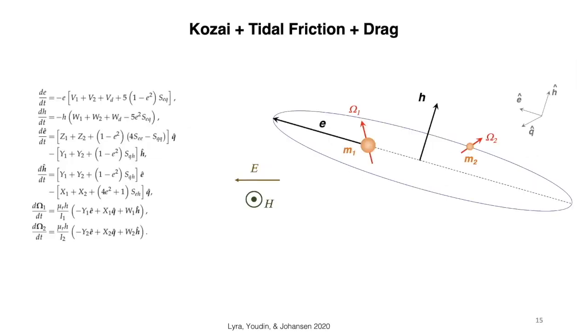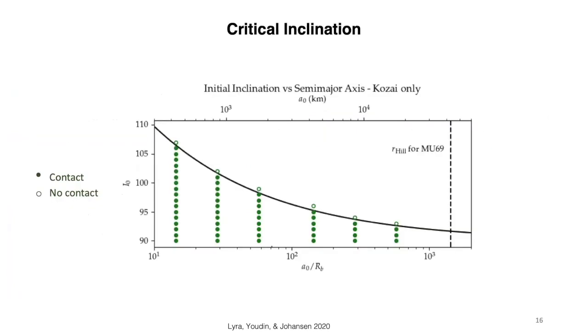So, to explore this, we added the drag force into a model that had Kozai-Lidov oscillations and tidal friction in the permanent quadrupole of the orbiters. So, these are the results. This is pure Kozai. This is the semi-major axis in units of the radius of the binary. This is the semi-major axis in kilometers. This is the Hill radius of Arrokoth and the initial inclination. This line here is the prediction for contact for only Kozai-Lidov.